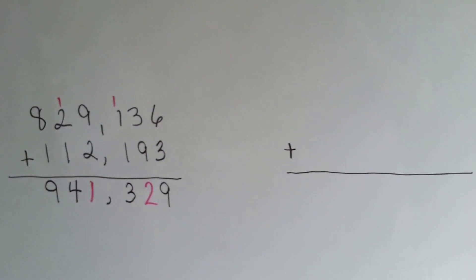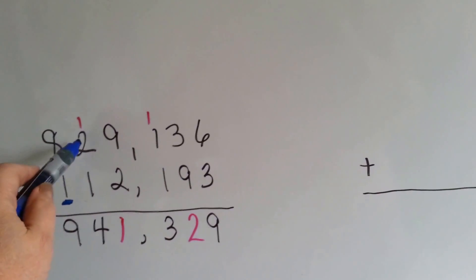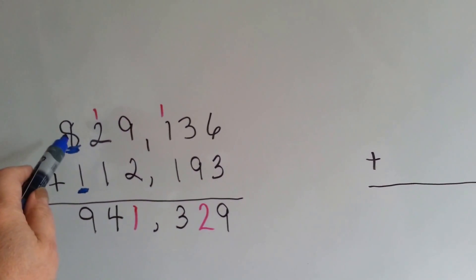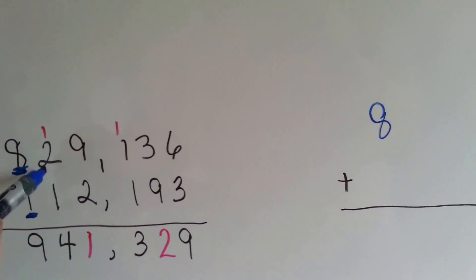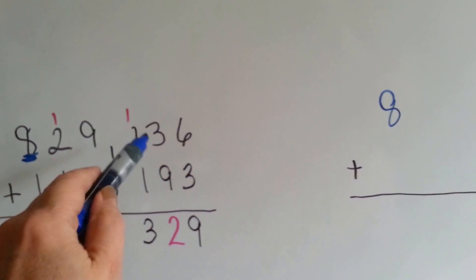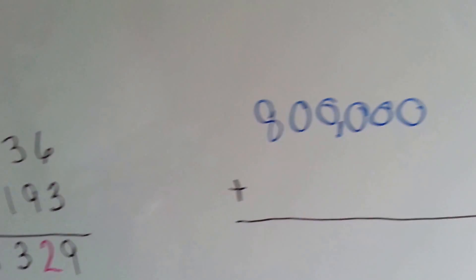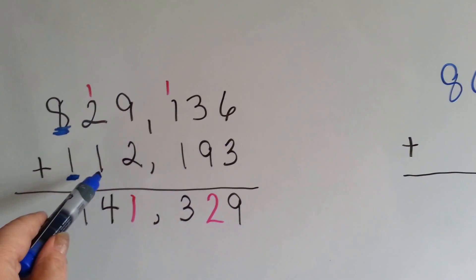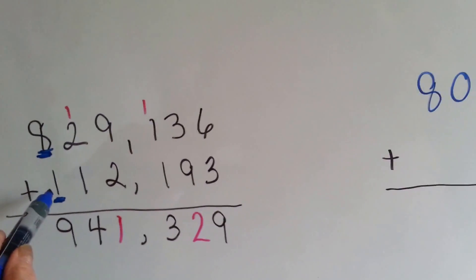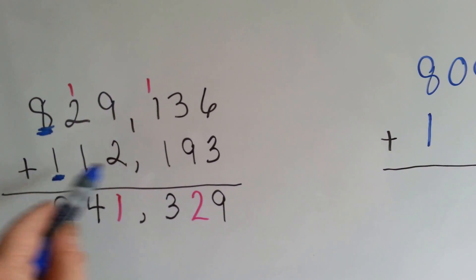Let's try it with this one. This is the number we're going to be rounding to, and these numbers are the ones that tell us what to do. Is the 2 bigger than a 5? No. So it tells the 8 to stay the same. And then when it's finished doing its job, it turns into a 0, and so does all the other numbers. So we're going to need 1, 2, 3, 4, 5 zeros. We put our comma in. Now we do the 1. The 1 to the right of it is a 1, and that's not bigger than a 5, so it's telling the 1 to stay the same. So 1 is going to stay the same, and it's directly underneath the 8.